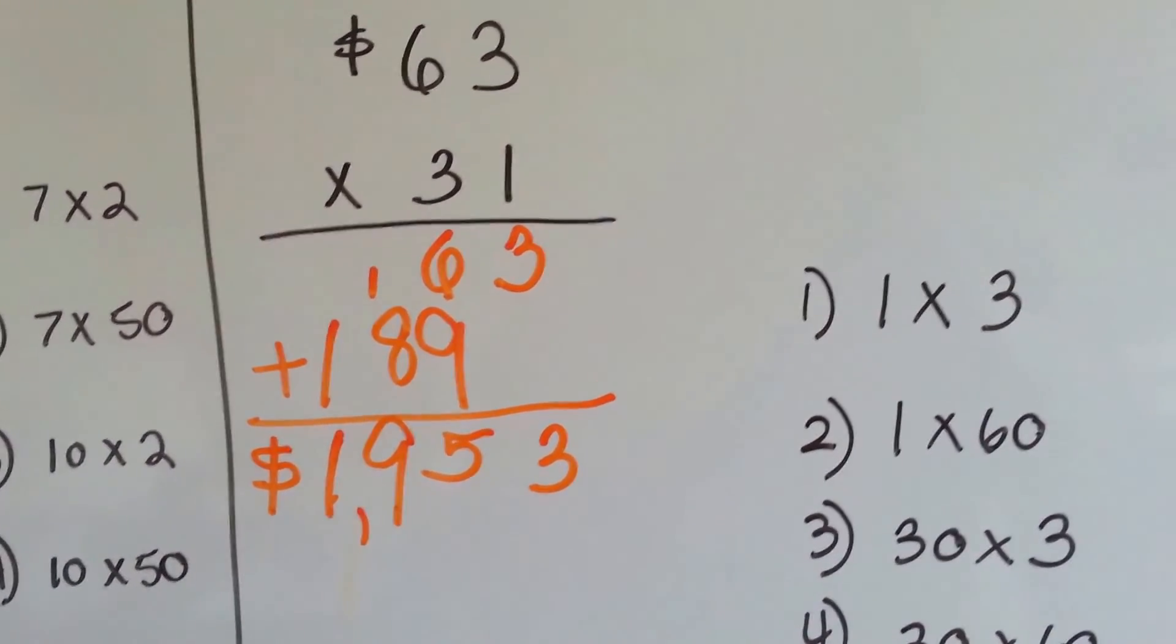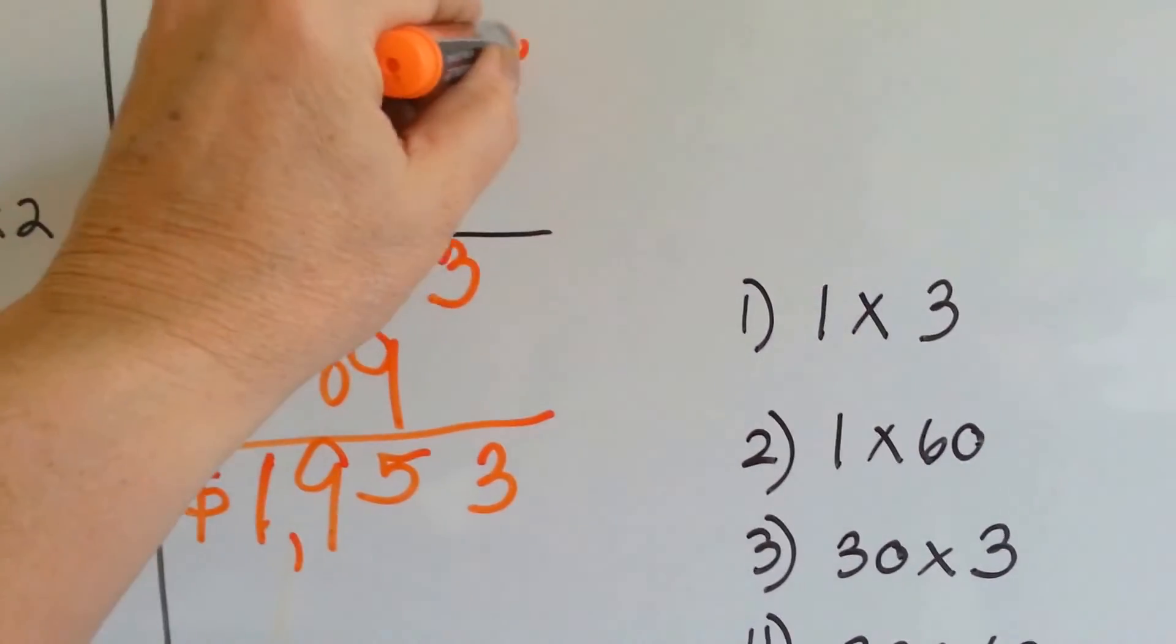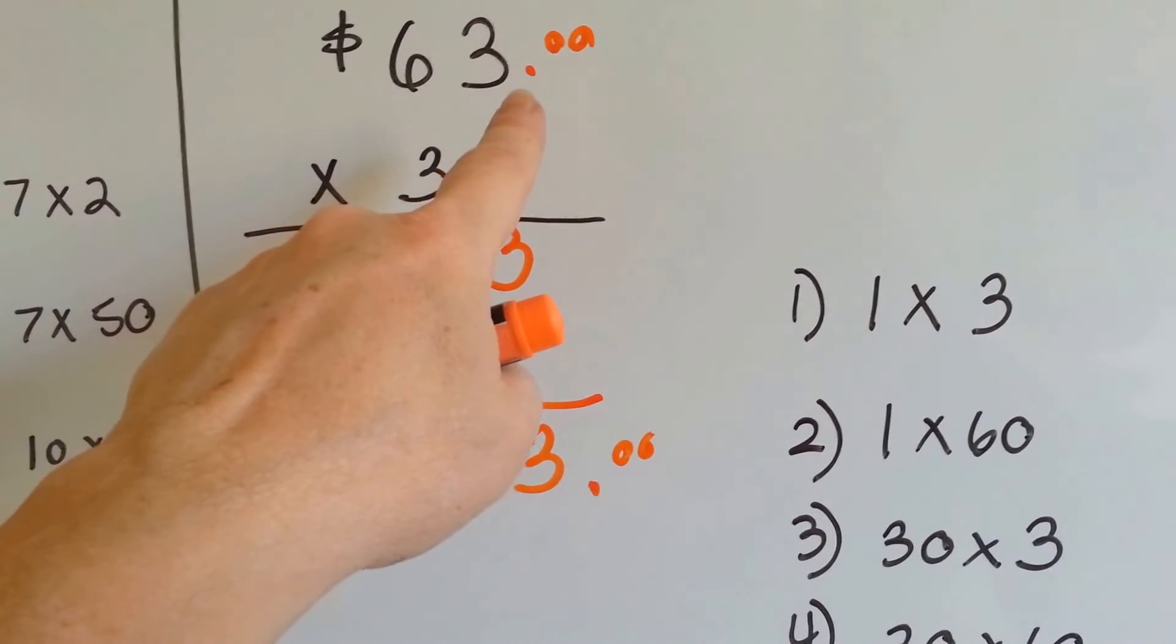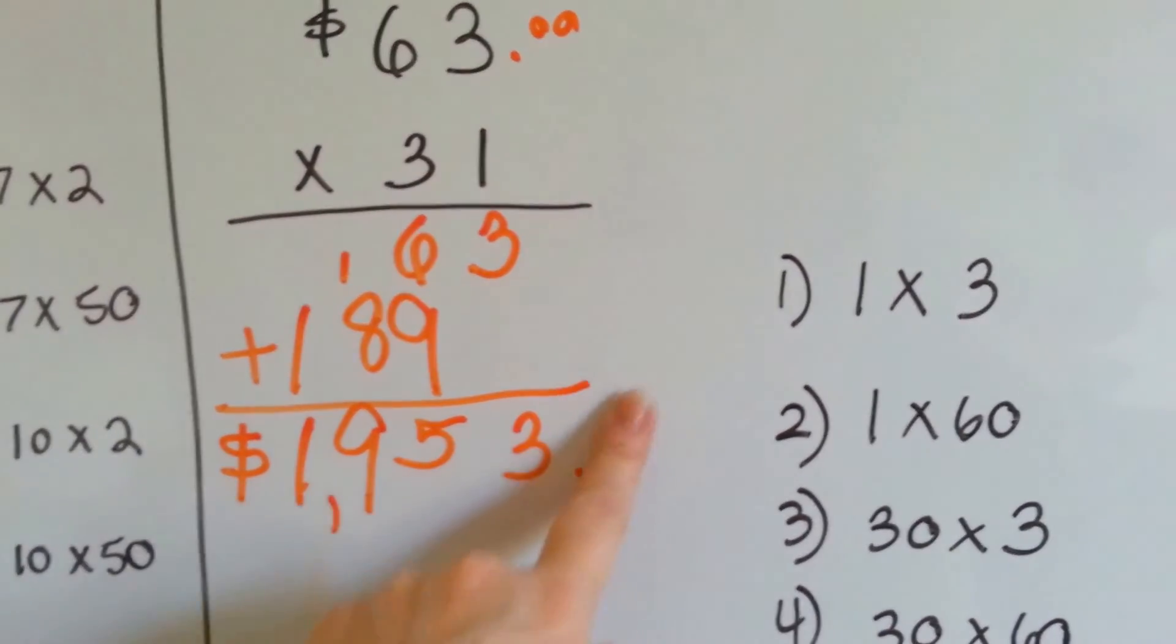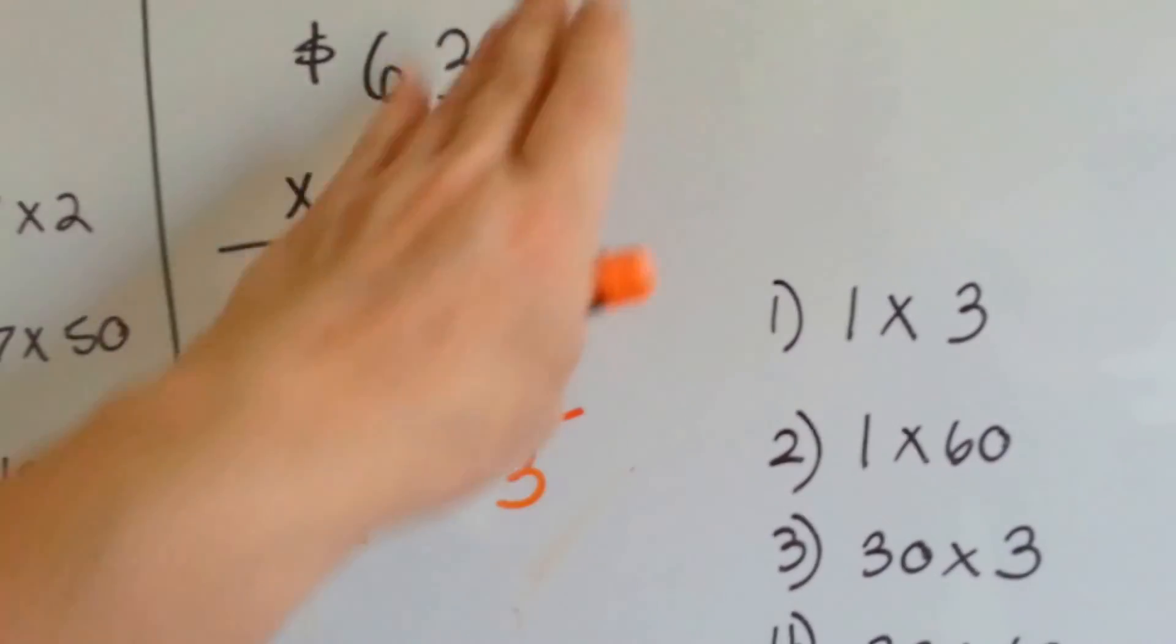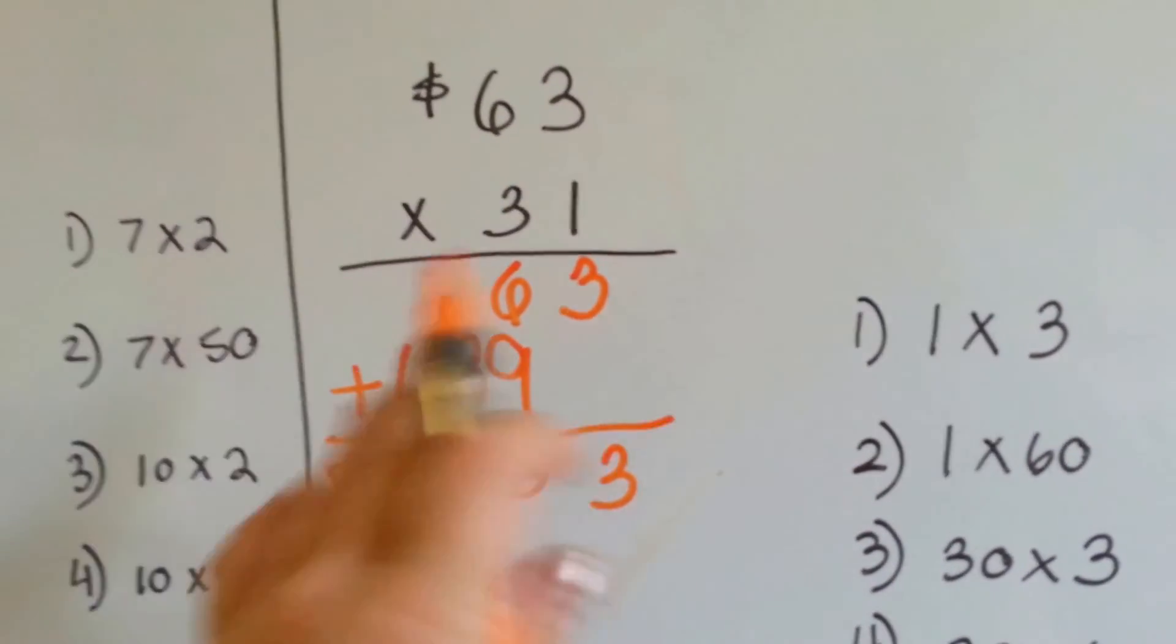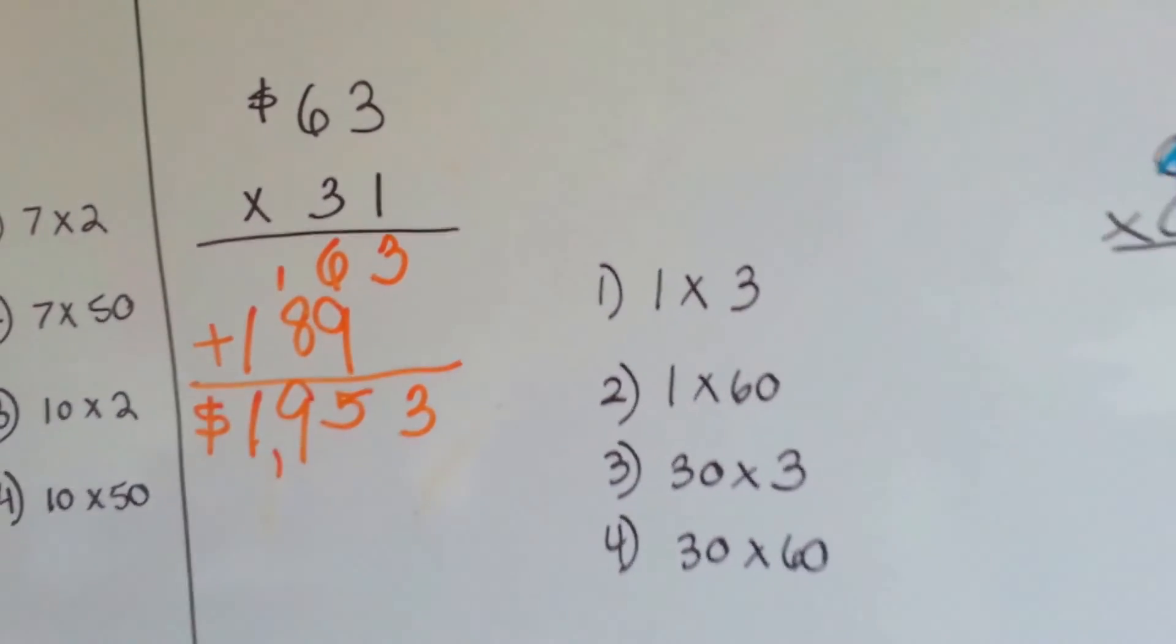There's a little hidden cents thing that they're not showing. See that? There normally would be a .00, but they're not showing that. It's just $63, so there's no decimal points in this problem.